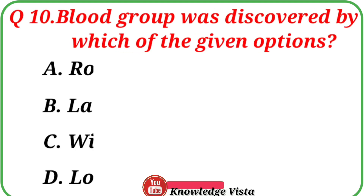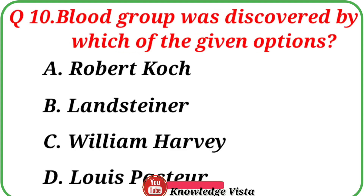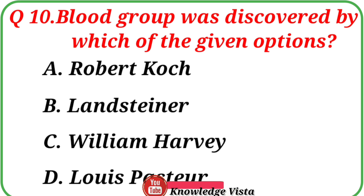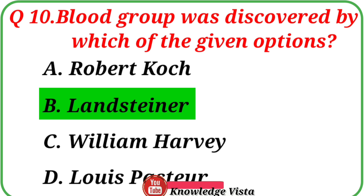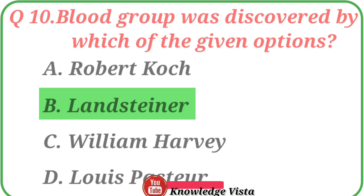Question number 10: Blood group was discovered by which of the given options? Option A: Robert Koch. Option B: Lance Steiner. Option C: William Harvey. Option D: Louis Pasteur. The correct answer is option B, Lance Steiner. The blood group was discovered by Lance Steiner, who is also known as the father of blood grouping.